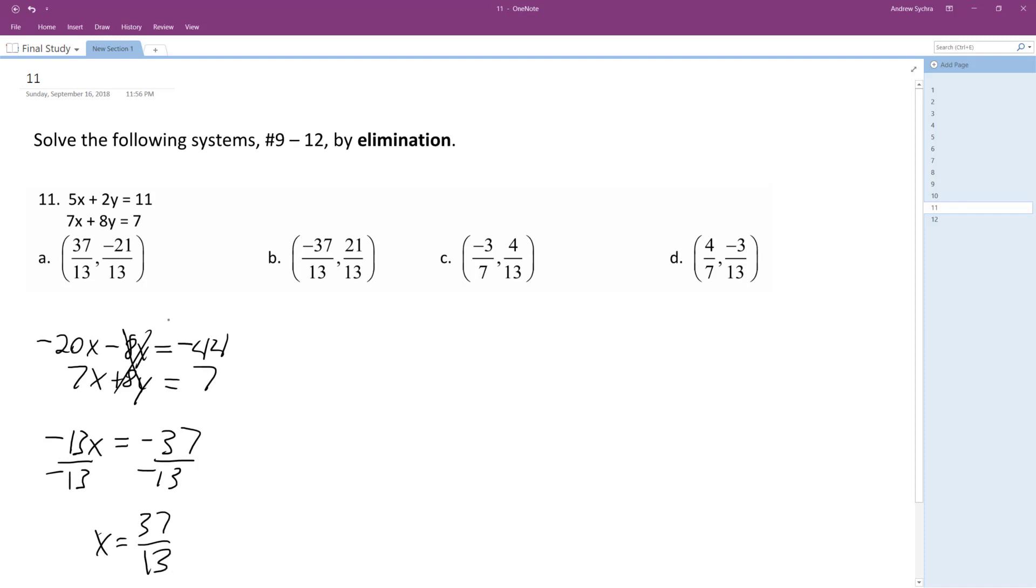Okay, so we can just plug this into the bottom equation. It doesn't matter which one. So, 7 times 37 over 13 plus 8y equals 7. That's messy.